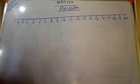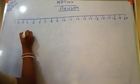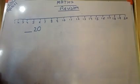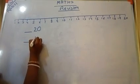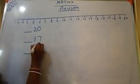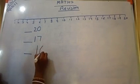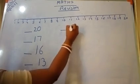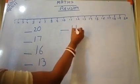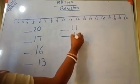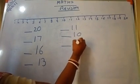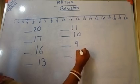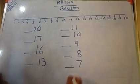Let's see the before numbers. As back: 20, 17, 16, 13, 11, 10, 9, 8, 7.